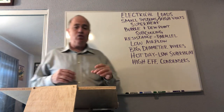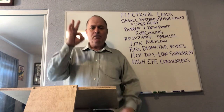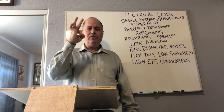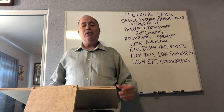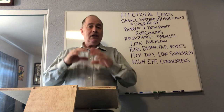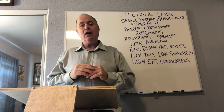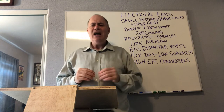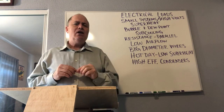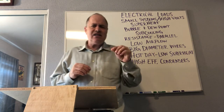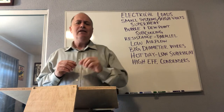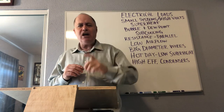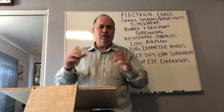Here we have big diameter wires. Big wires like number two or number four wires are really big, but they have low American Wire Gauge numbers. Then real tiny wires like 16 or 14 gauge are bigger numbers, but they're actually a smaller diameter of wire.